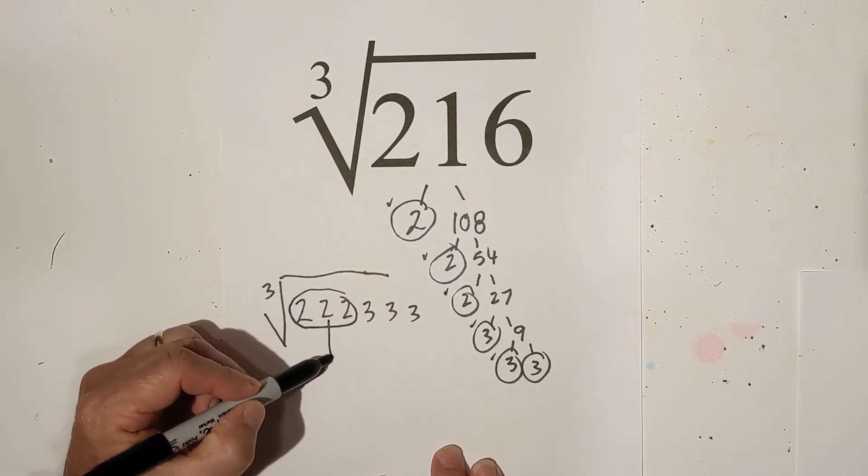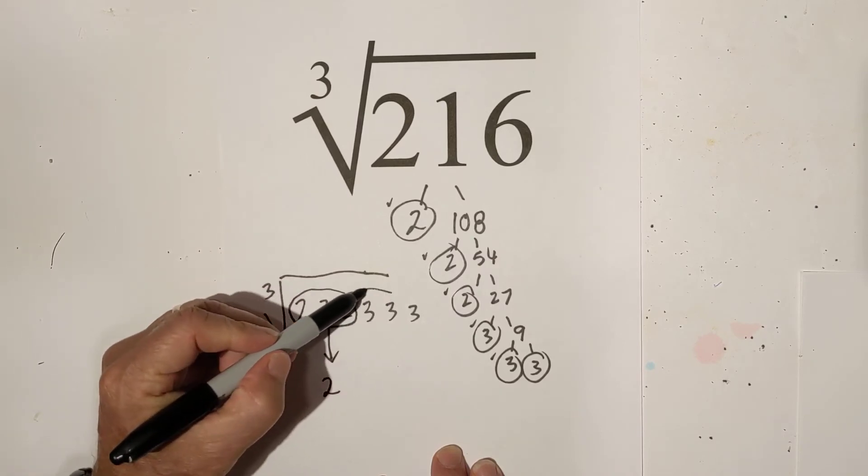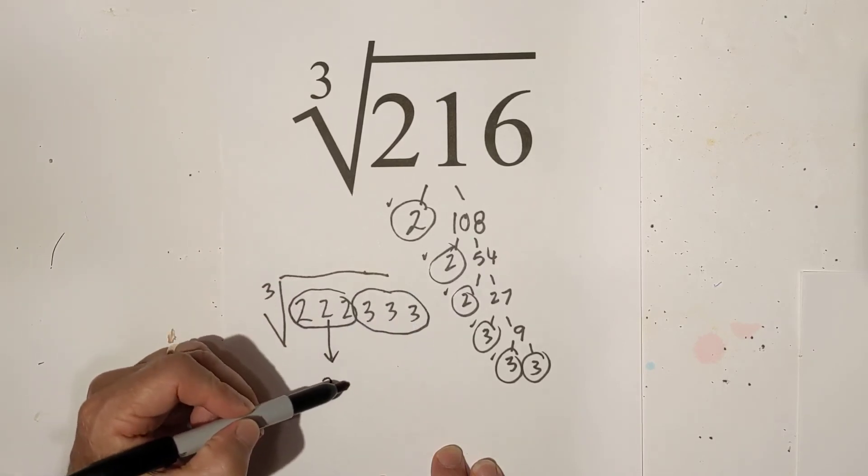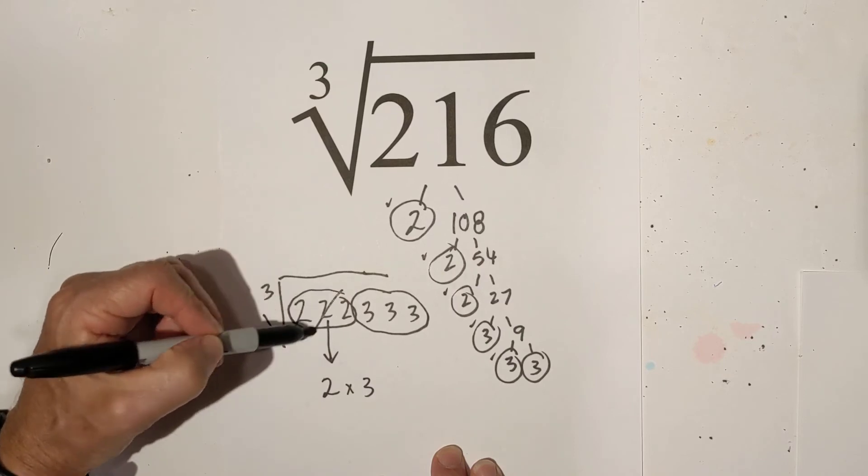So I have a triplet of twos so I'll write it down here and I have a triplet of threes.